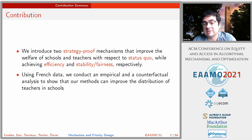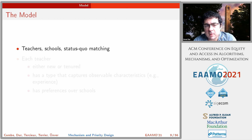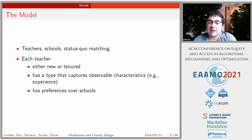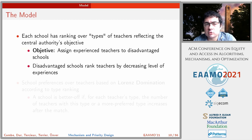We also use French data to conduct empirical and counterfactual analyses showing our methods can improve the distribution of teachers in schools. On the theory side: this is a two-sided market with teachers on one side and schools on the other. Each teacher is either a new teacher or a tenured teacher currently working in some school. Each teacher has a type capturing observable characteristics — in this paper we use experience — and each teacher has preferences over schools.